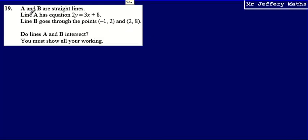This is question 19. Here I'm told that A and B are straight lines, and line A has equation 2y equals 3x plus 8. I'm told that line B goes through the points negative 1, 2 and 2, 8. And then I'm asked, do the lines A and B intersect?